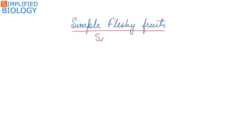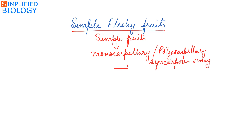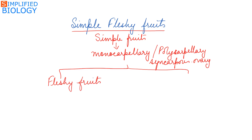Simple fruits are fruits that develop from a monocarpellary or a polycarpellary syncarpous ovary. These simple fruits can be divided into two types: fleshy fruits and dry fruits.